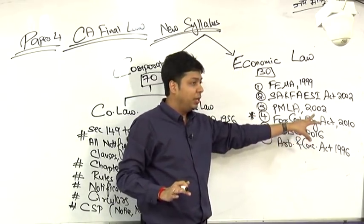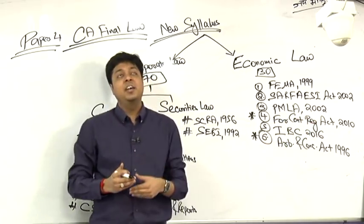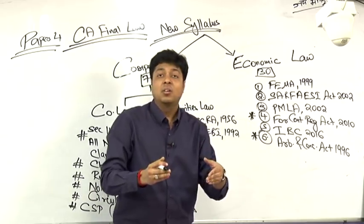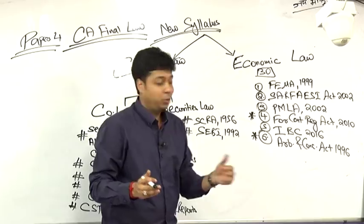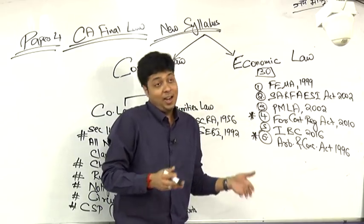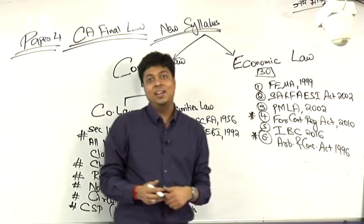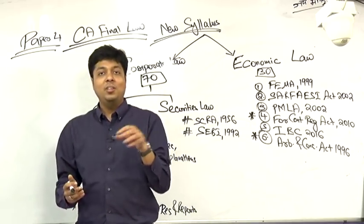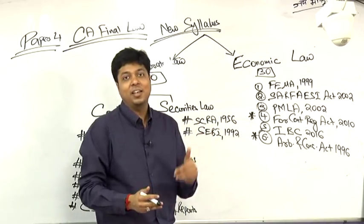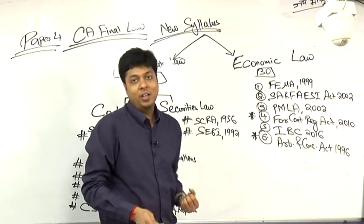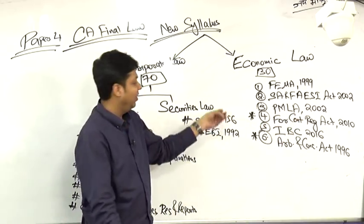So the new chapters have been added: Foreign Contribution Regulation Act 2010 and Arbitration Conciliation Act. Arbitration Conciliation is added because nowadays more than 50% of the cases are getting settled outside the court through arbitration route, and chartered accountants must have sound knowledge of arbitration and conciliation 1996 so they can play a vital role in settling the cases outside the court.